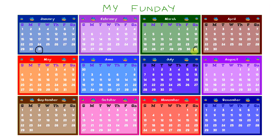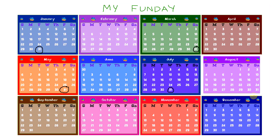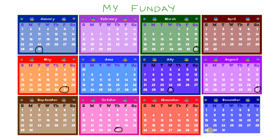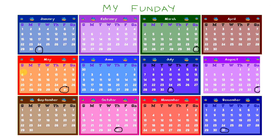March — yes, 31 days. Look at April — no. May — the next one, May — yes, 31 days. Let's go to June — but it's not 31. July — yes, July has 31. August — August has 31.